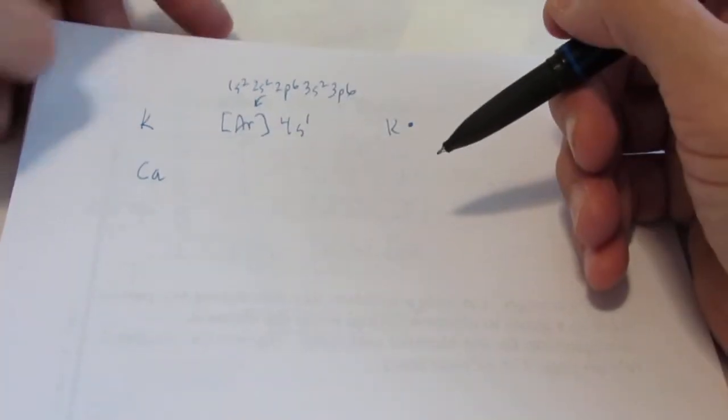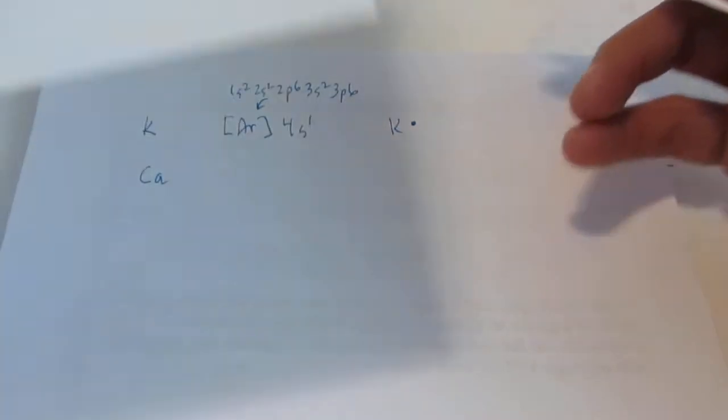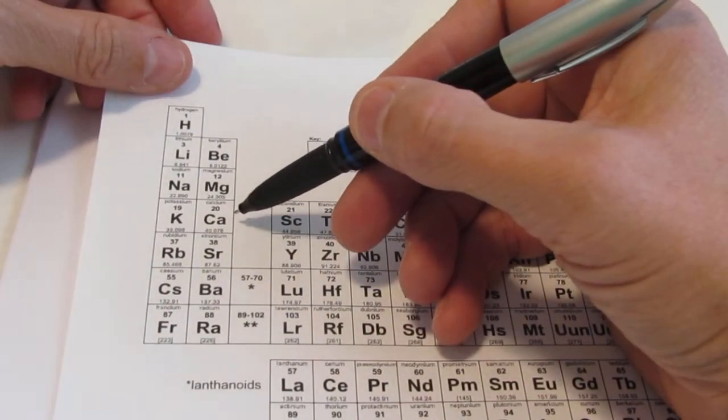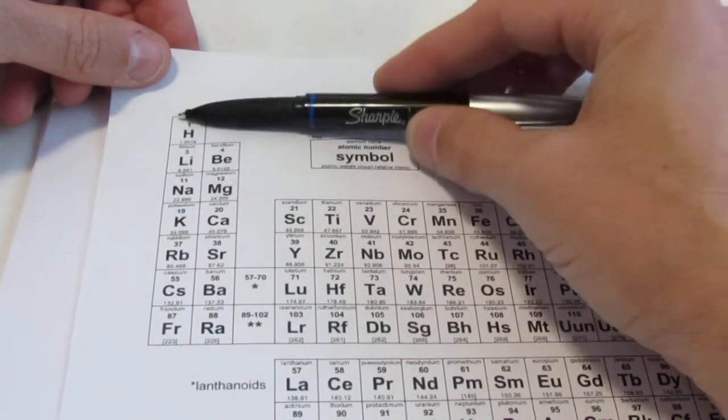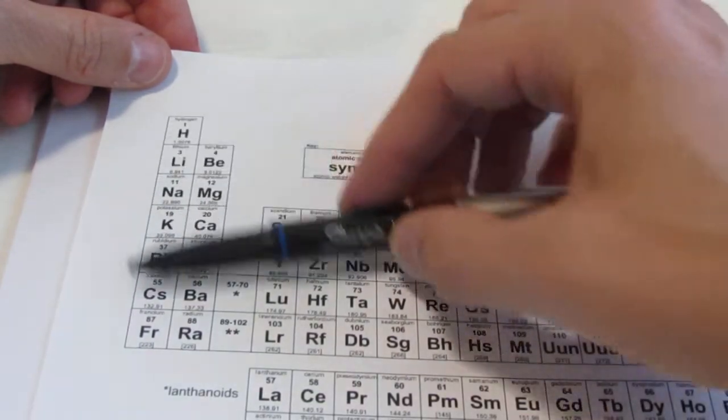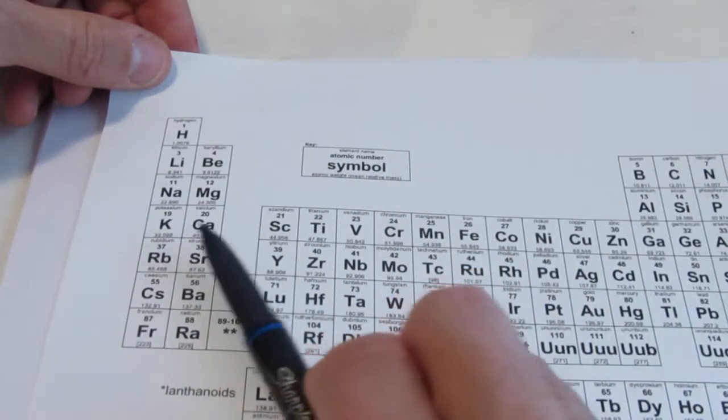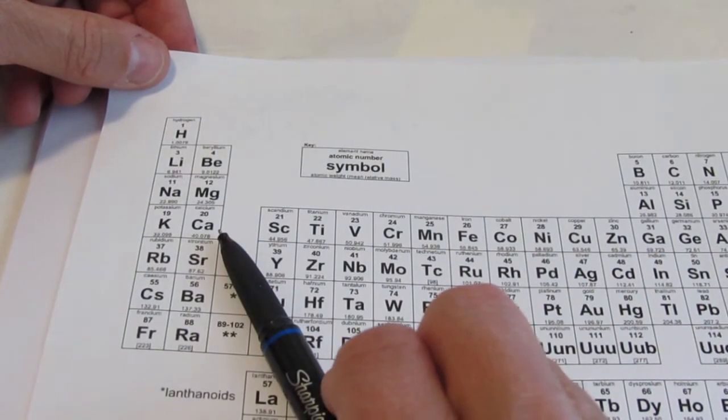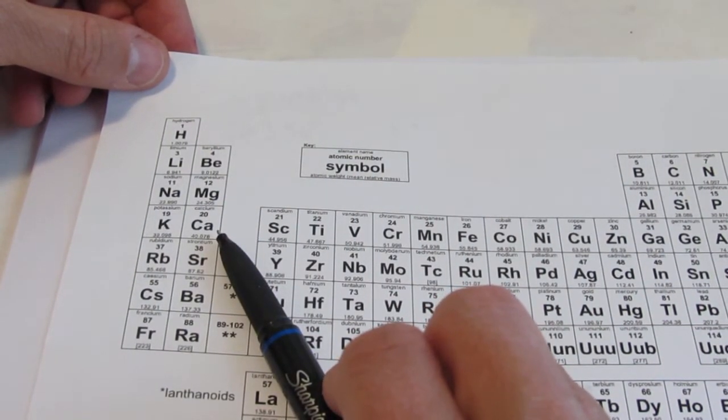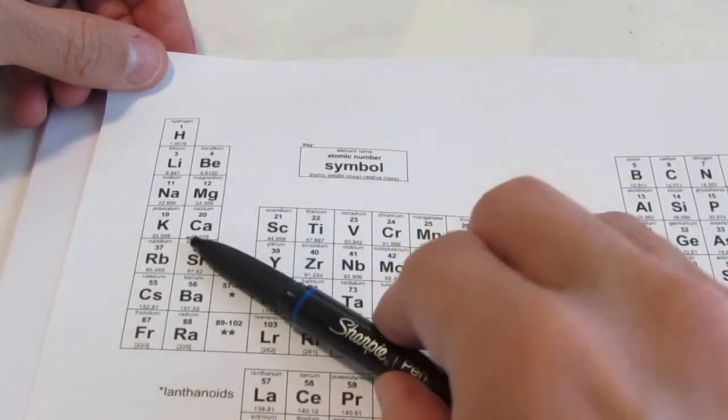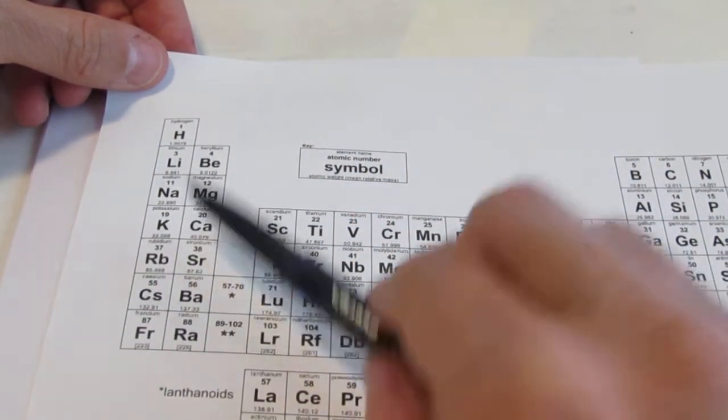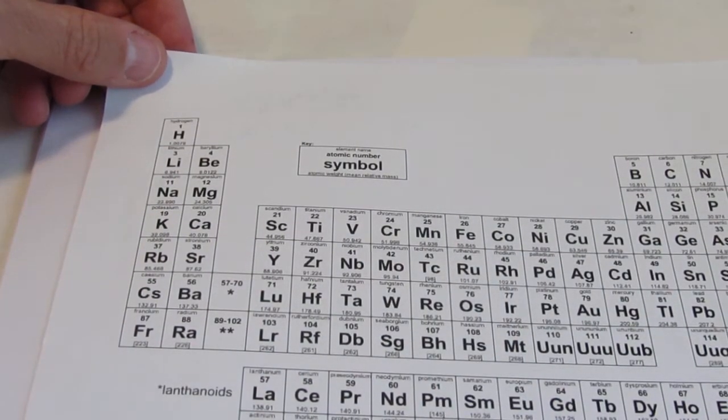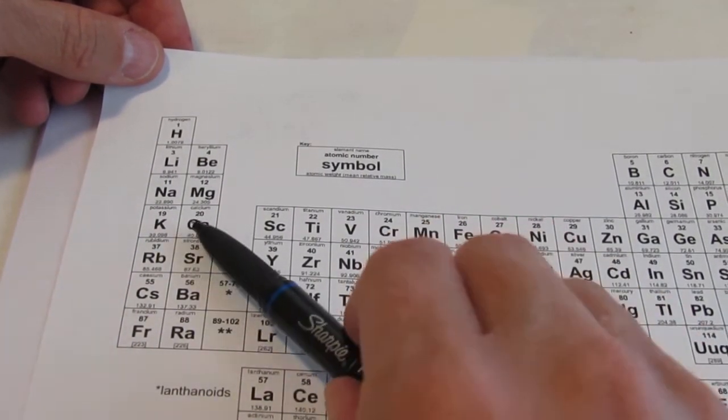We're moving on to calcium now. Calcium, take a look. As atomic number 20, notice it's the 1, 2, 3, the 4th row down on the periodic table, and this is what we call S block, and it's the second element over. So we might be tempted to say that its configuration would end with 4S2, and that would be correct.